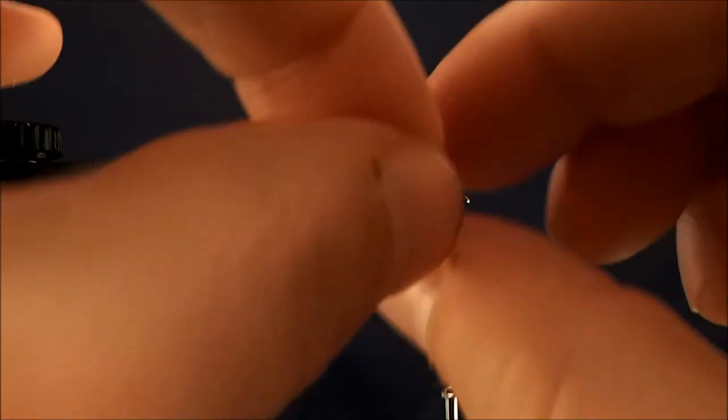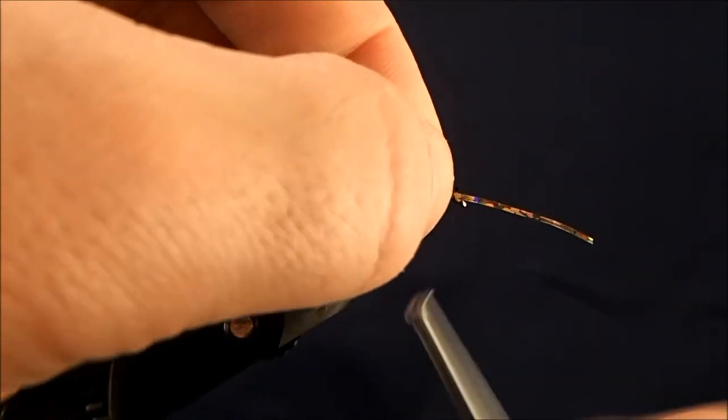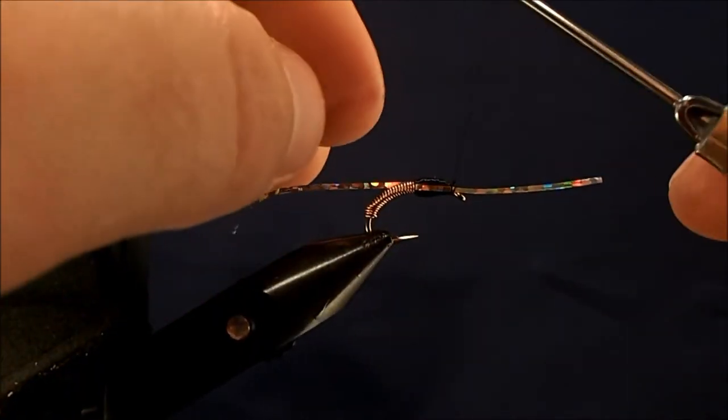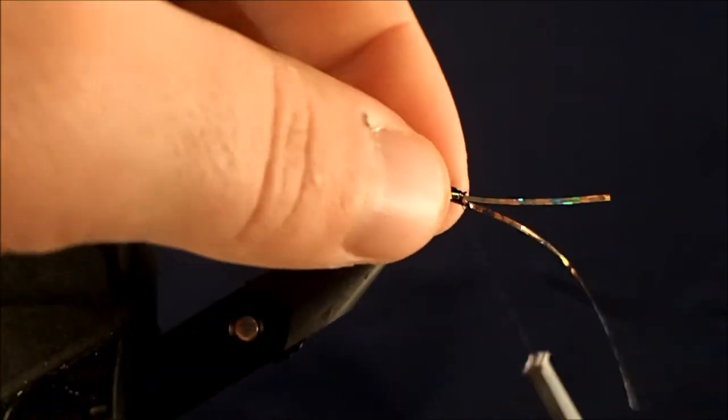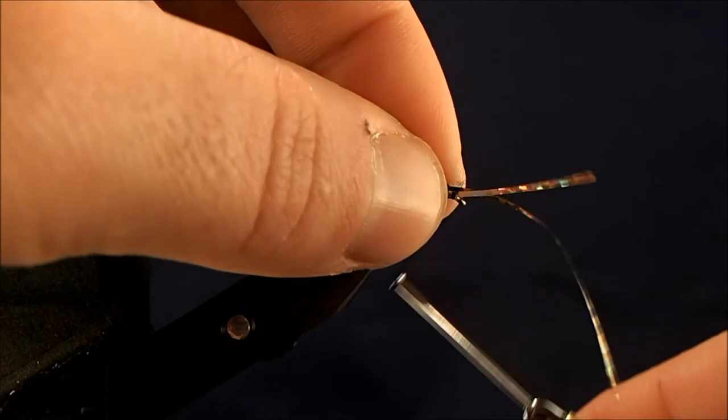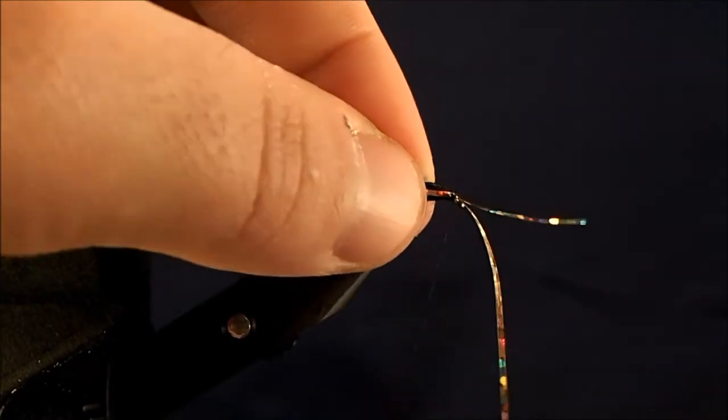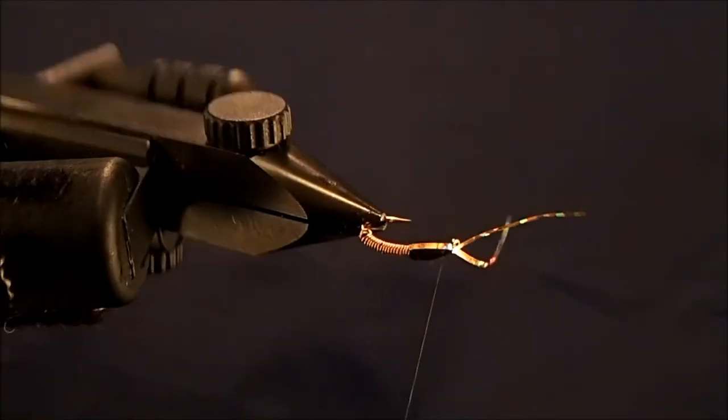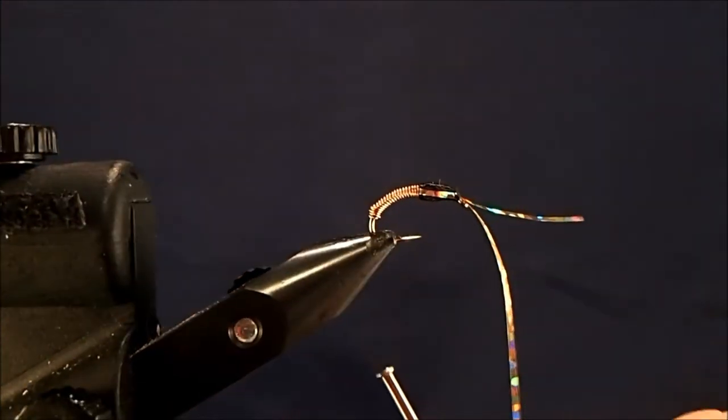From there, then I just fold over my gold holographic tinsel, put a couple wraps in to secure each side, give it a rotate, make sure I have them just the way I want them.